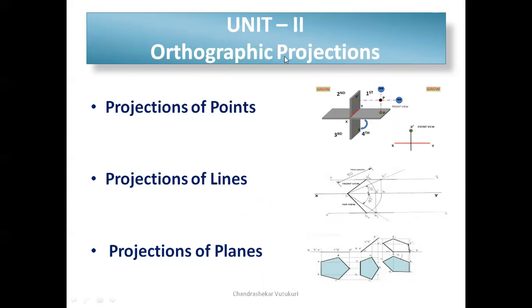For unit two in the question paper, the question numbers are 3 and 4. There may be a 15-mark direct question or a 7-plus-8 combination — for example, 3A may be points and 3B may be lines, or 4A may be lines and 4B may be planes. Try to practice all topics, or at minimum any two compulsory ones.